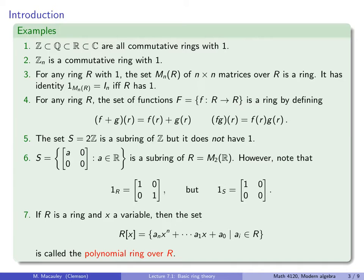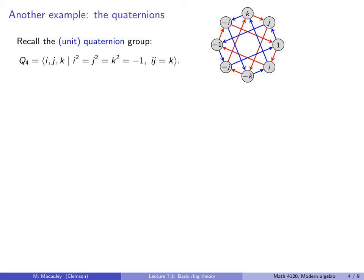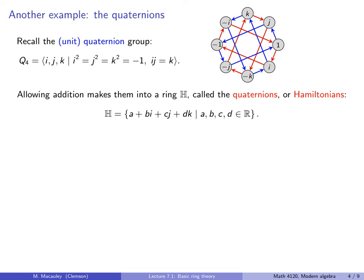I have one more important example. Recall from group theory the unit quaternion group Q_4, which has eight elements: 1, i, j, k, and their negatives. Recall that j and k behave like i in that they can be thought of as square roots of −1, and i·j = k. The operation there is multiplication, but if we allow addition — so that i+j or i+i=2i gives us more elements — that turns it into a ring. Allowing addition makes the quaternions into a ring H, sometimes called the Hamiltonians, formally the set of all a+bi+cj+dk where the coefficients are from R.